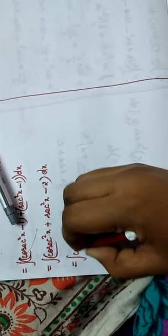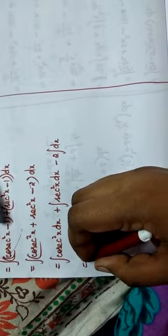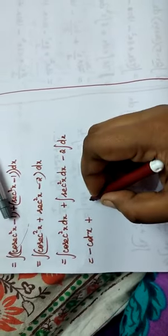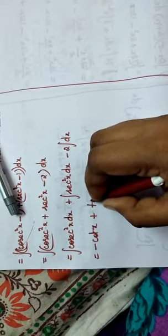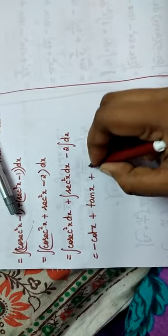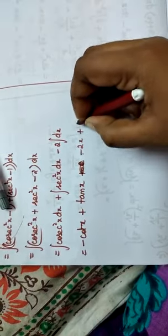Separate the integrals: integral of cosecant squared x dx, plus integral of secant squared x dx, minus 2 integral dx. The integral of cosecant squared x is minus cot x, and the integral of secant squared x is tan x. One remaining value gives minus 2x plus c.